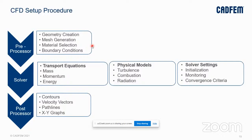CFD has a reputation for generating colorful graphics and images. This is achieved in the post-processing stage. Graphics can be created using contours, velocity vectors, pathlines, and graphs. Various flow features of the area of interest are analyzed in the post-processing stage.